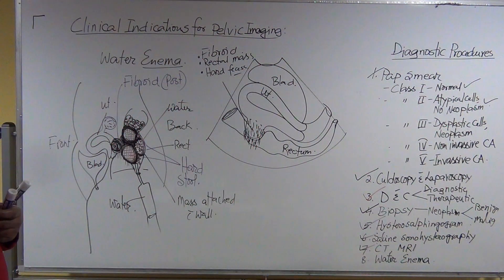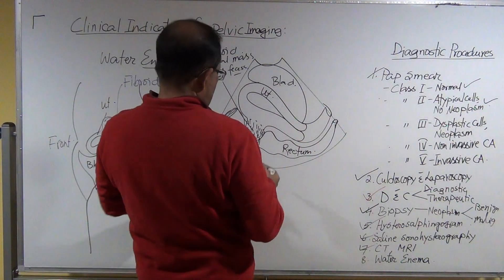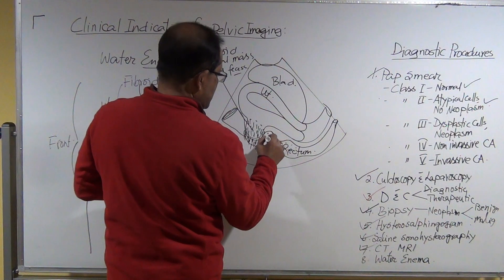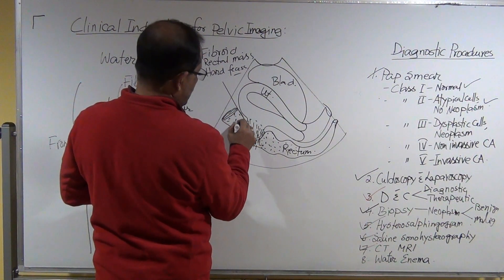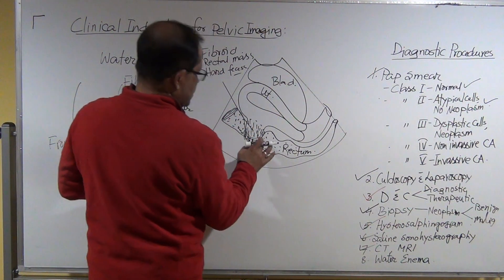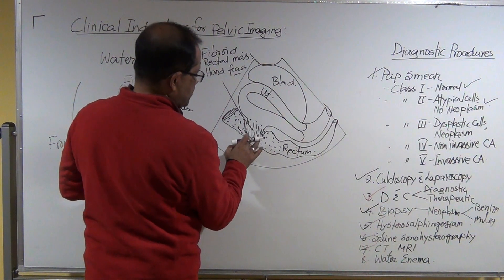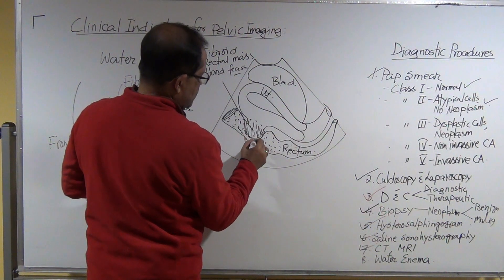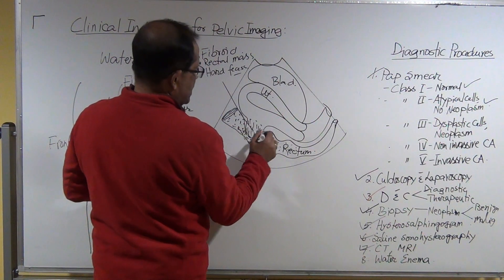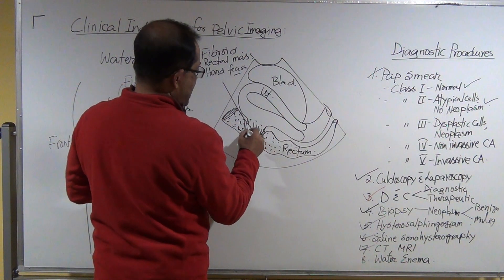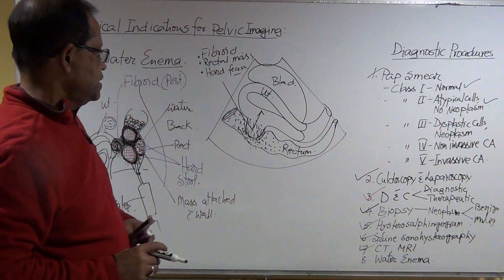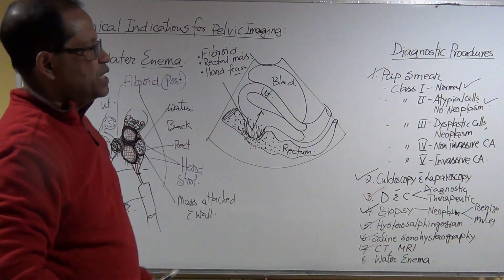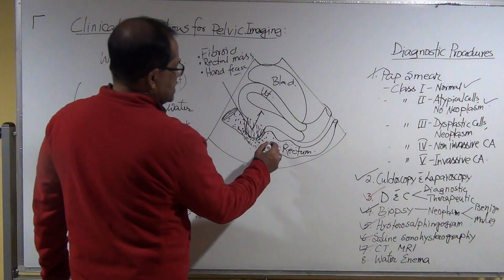So now if you give the enema, the enema will go into the rectum. And you can easily see that this mass is a continuation with the uterus, and the rectum is just compressed posteriorly by a subserous fibroid. So this is how enema works.